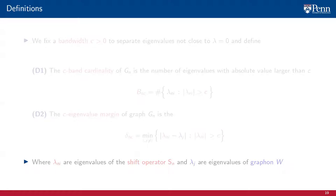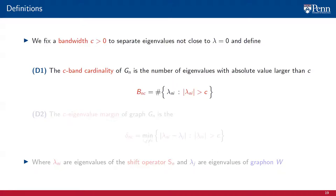We also need to introduce some definitions so that we can compare graph filters to graphon filters. These definitions require that we fix a bandwidth C to separate eigenvalues that are close to 0 from those that are not. Associated to C, we define the C-band cardinality B(n,C), which is a count of the number of eigenvalues whose absolute value is larger than C — a number we know is finite. Also associated with C, we define the C eigenvalue margin of the graph Gn. This margin is the smallest gap between a graph eigenvalue λ_{n,i} and the graphon eigenvalue λ_j with different index. The graph eigenvalue has to be in the C-band, but the graphon eigenvalue can be anywhere. Typically, this gap is the difference between the graph eigenvalue immediately above C and the graphon eigenvalue immediately below C.